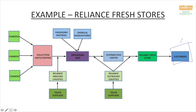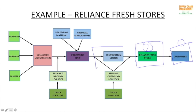Let's take the example of Reliance Fresh stores in India. This is the first stage wherein a customer goes to a retail shop — the retailer here is nothing but that Reliance Fresh store, which is our stage two. Whenever this Reliance Fresh store is in short supply of products, they are fulfilled by the distribution center, which is the third stage.